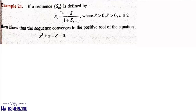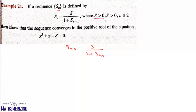Now the next question is, if a sequence SN is defined by SN equals S upon 1 plus SN minus 1, where S is greater than 0, S1 is greater than 0 and N is greater than or equal to 2, then show that the sequence converges to a positive root of the equation x squared plus x minus S equals 0.